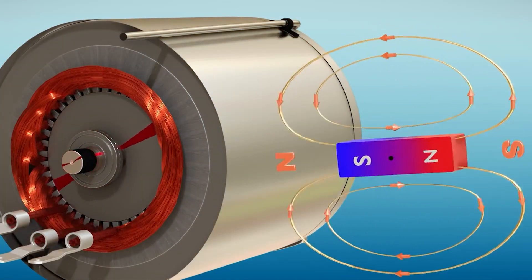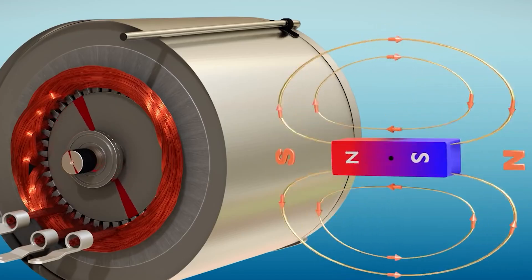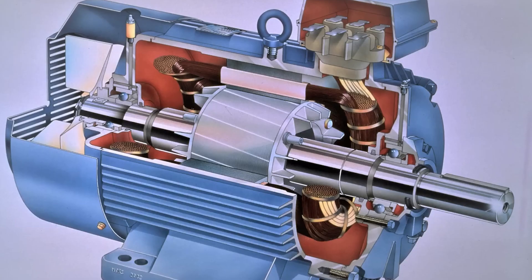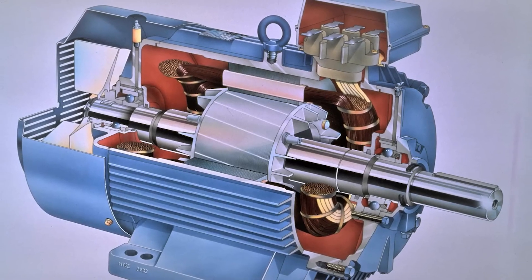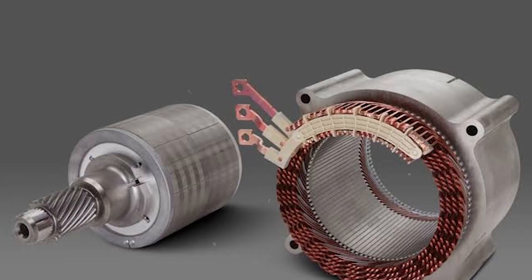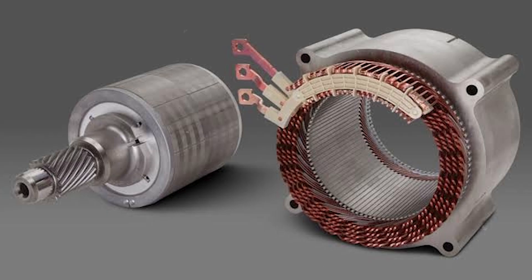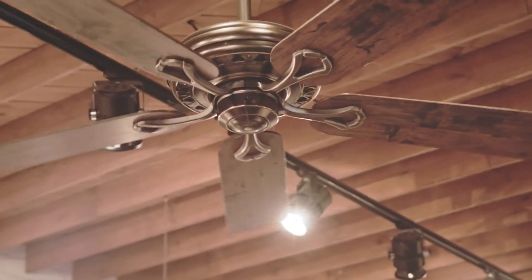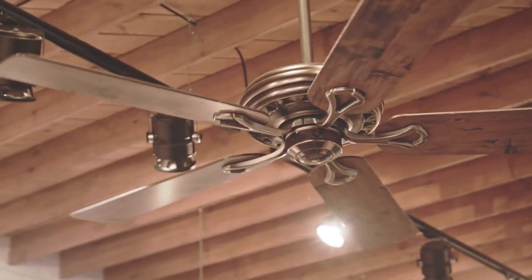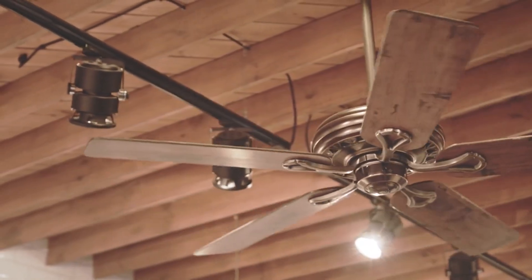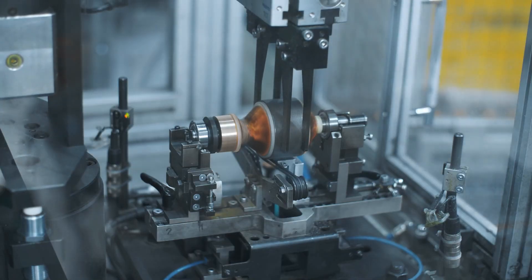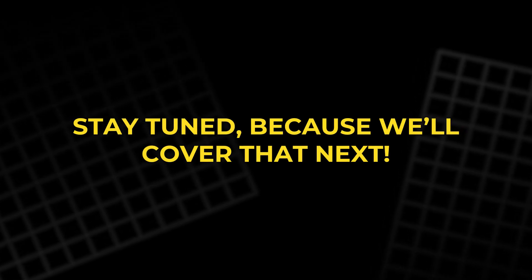Now that we know how polarity reversal works and the role of the commutator and brushes, we're really close to understanding the full motor mechanism. The process we've just described is exactly what happens inside the simplest motors, like the ones that power your toys, fans, and even household appliances. But how do we make motors even more powerful?